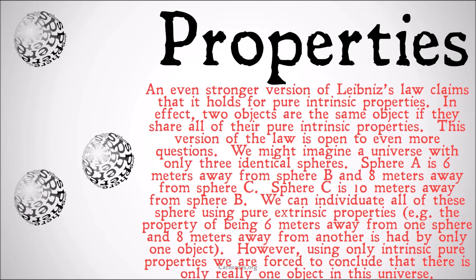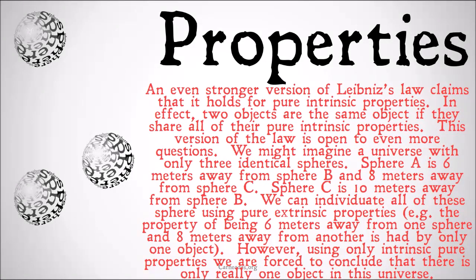An even stronger version of Leibniz's Law claims that it holds for pure intrinsic properties. Two objects are the same object if they share all of their pure intrinsic properties. This version of the law is open to even more questions. We might imagine a universe with only three identical spheres. Sphere A is six meters away from sphere B and eight meters away from sphere C. Sphere C is ten meters away from sphere B. We can individuate all of these spheres using pure extrinsic properties. So with our former definition of just including pure, we can still individuate three spheres and say there are three spheres in this universe. For example, the property of being six meters away from one sphere and eight meters away from another is had by only one object.